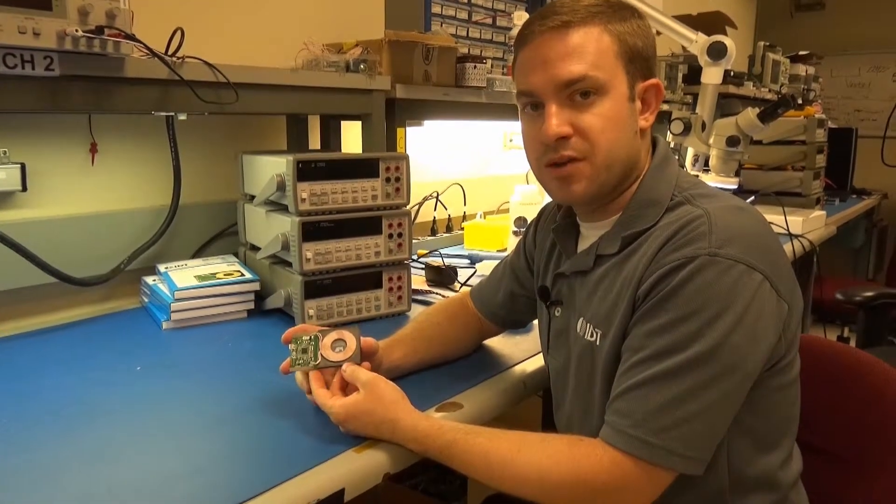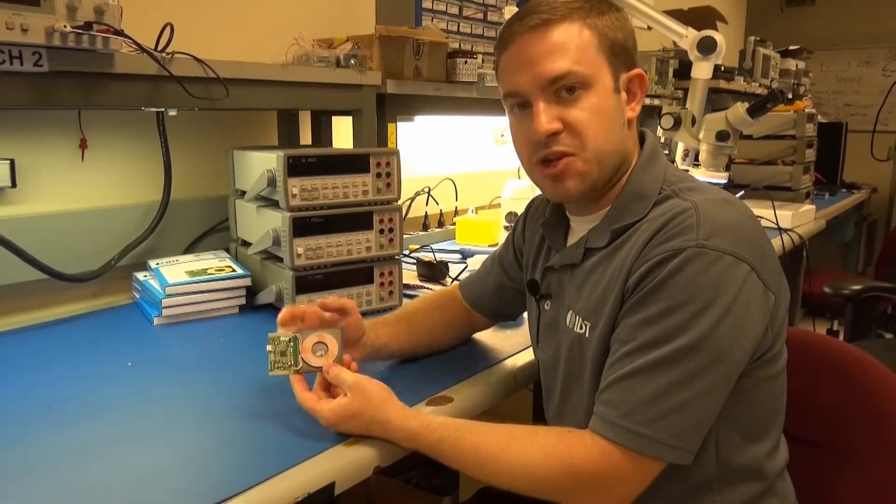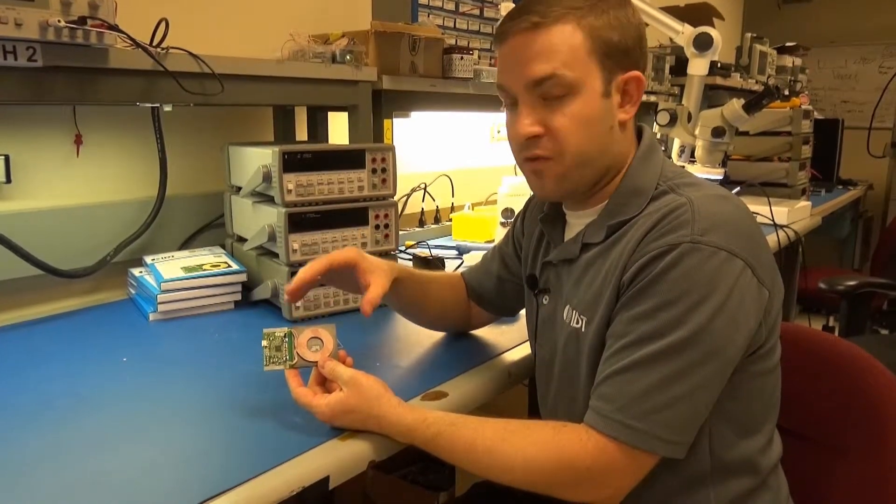Here I have the P9038 wireless power transmitter board and I'm going to show you how to remove the coil from the board.